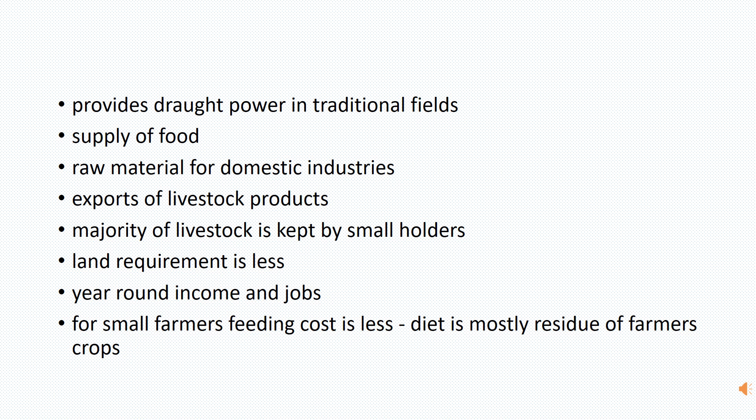Livestock also provides raw material for domestic industries. We get wool, we get animal hair which is used in making brushes, and we get hides which are used in the leather industry. Milk is used in cheese making. Exports of livestock products contribute around 13% of our total exports, so it's important.